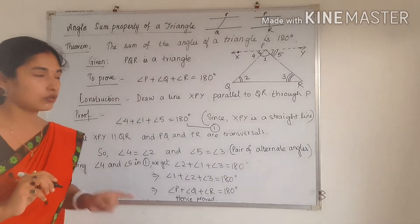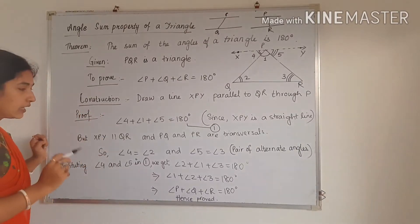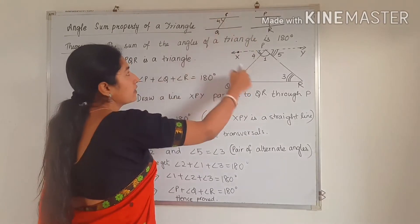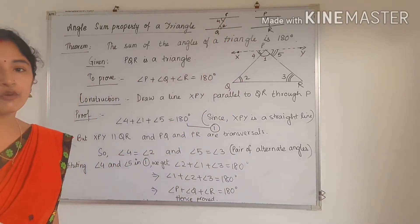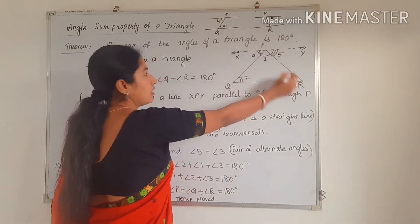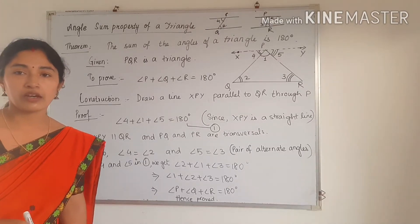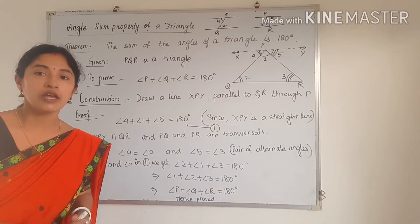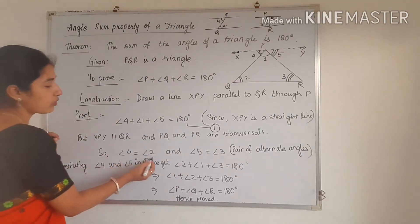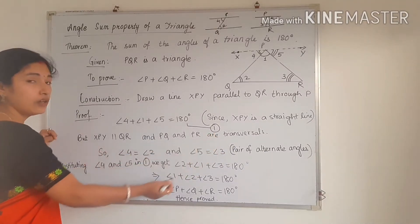If a transversal cuts parallel lines, we can write the pair of alternate angles. Here angle 4 and angle 2 are alternate angles, so angle 4 is equal to angle 2. Similarly, angle 5 and angle 3 are also a pair of alternate angles and are equal, so angle 5 is equal to angle 3. In brackets you have to write the reason: pair of alternate angles.